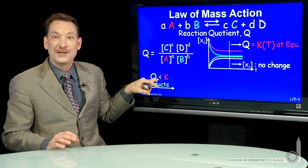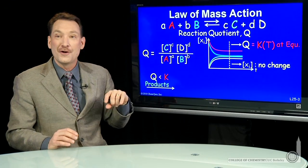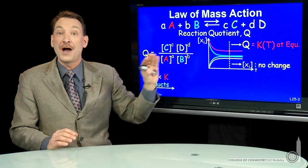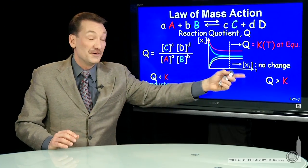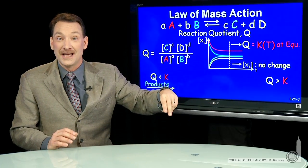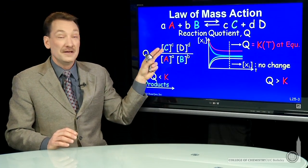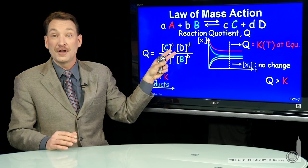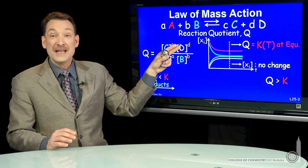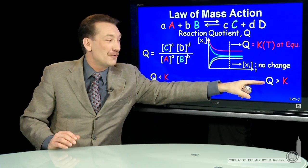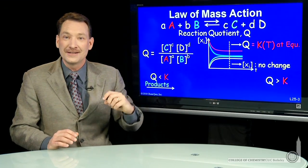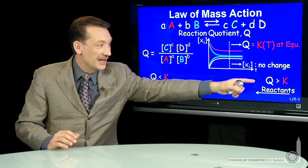So comparing Q that you measure at any time with your known constant gives you predictive power. Which way is that reaction going to go? Same thing, if you measure Q and it's bigger than K, well, that says this numerator is too large. Too many products, I should go back to reactants.